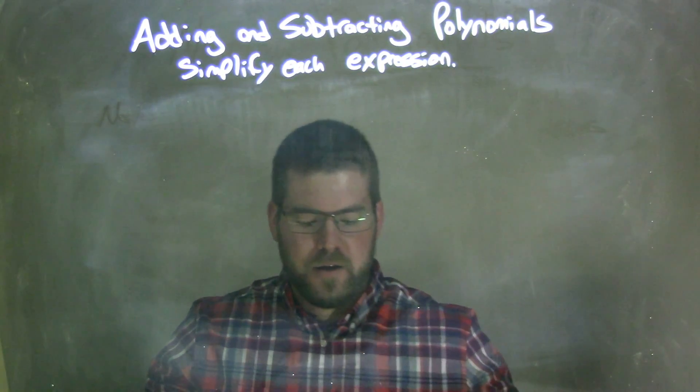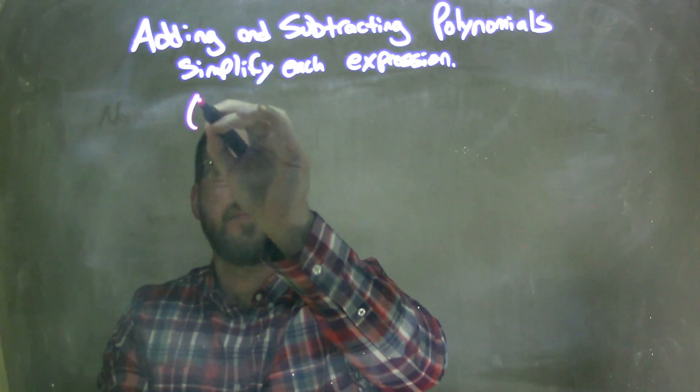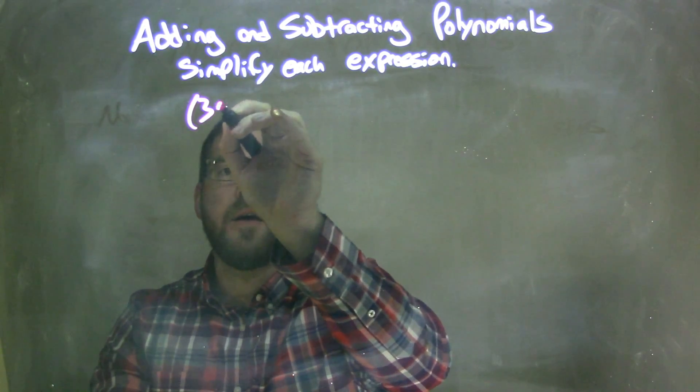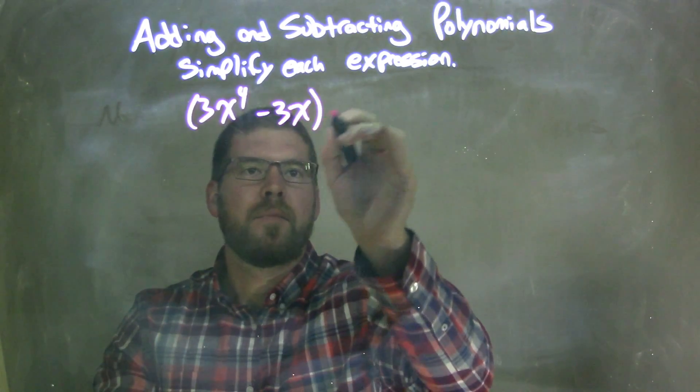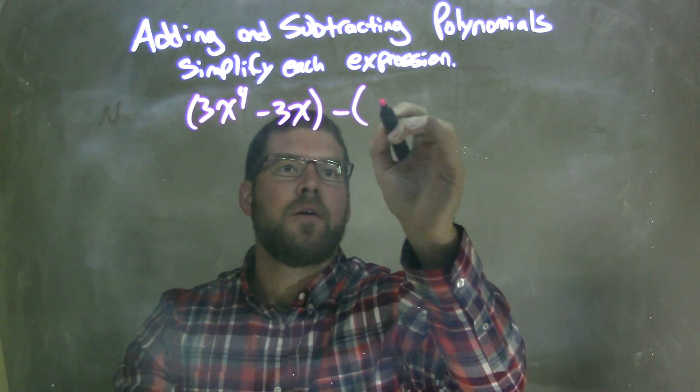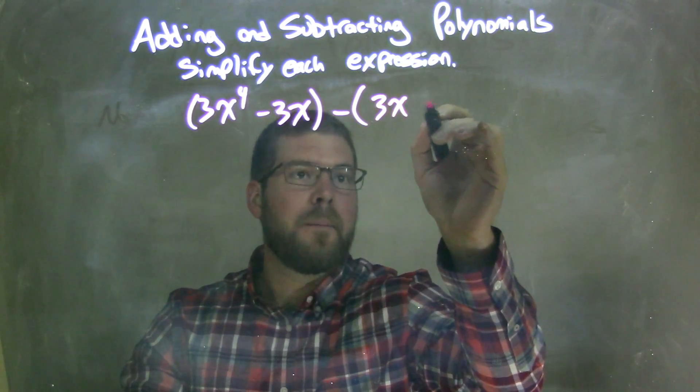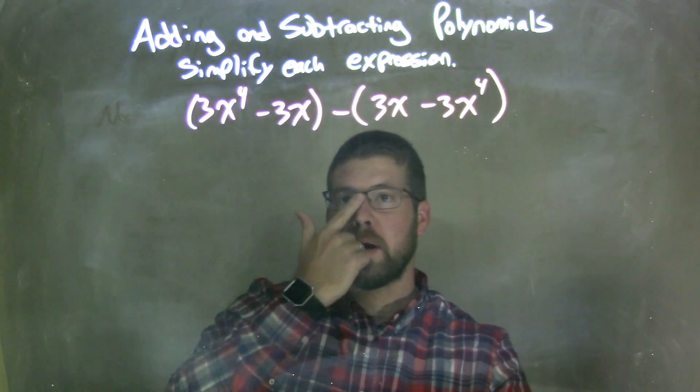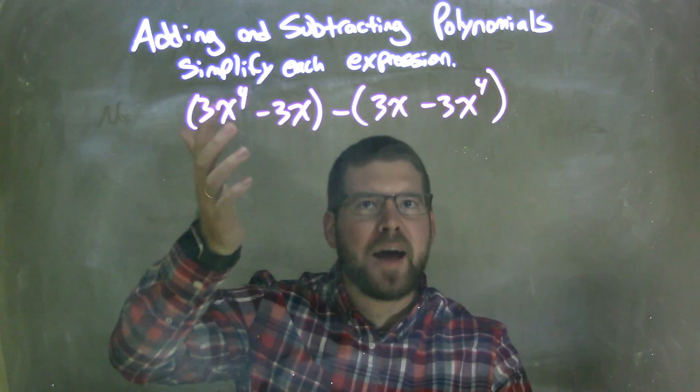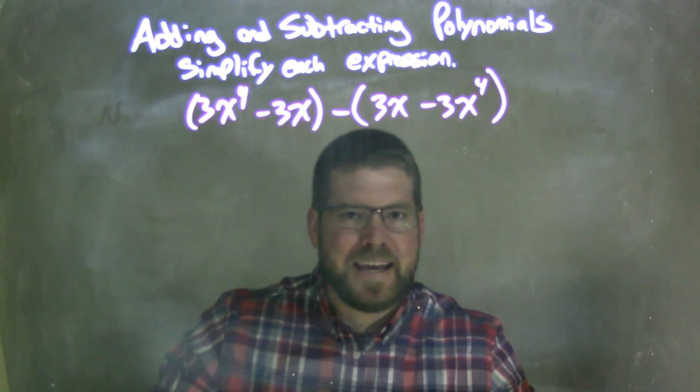So, if I was given this polynomial, 3x to the 4th minus 3x minus, parentheses again, 3x minus 3x to the 4th. Okay, this one's tricky. There's a lot of 3's, a lot of x's, and a lot of minus signs. We've got to keep them in line.